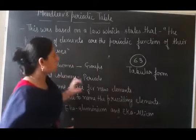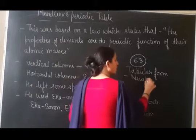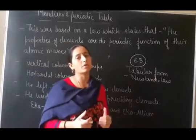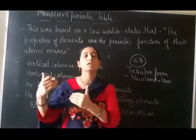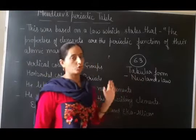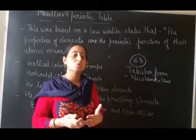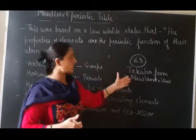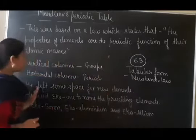Vertical columns and horizontal columns were used to arrange the elements. The first point Mendeleev followed was according to Newland's Law - every eighth element has similar properties. Mendeleev also followed this Newland's Law of Octaves. But as new elements started being discovered, he began leaving spaces in between, anticipating that future elements could be discovered with atomic masses in between existing ones. So he left some space for new elements.